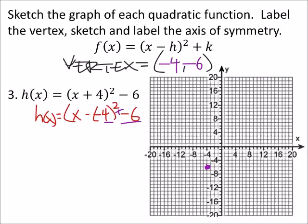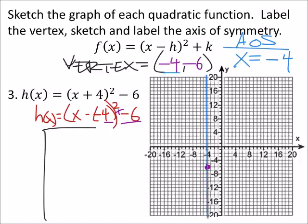And next, I'll put my axis of symmetry, which is where the x value is the same x value in the ordered pair for the vertex. So x is negative 4. Let's draw that line.